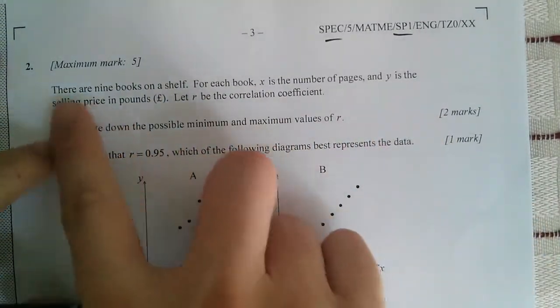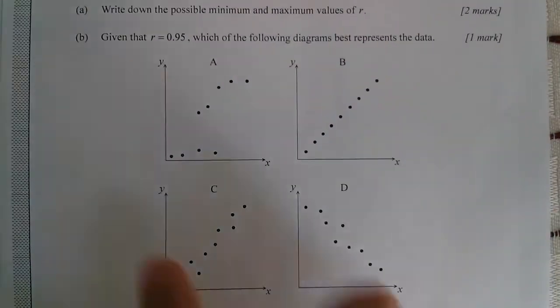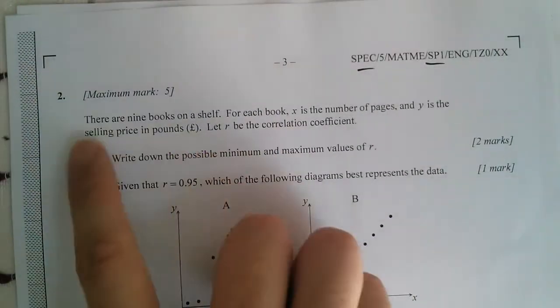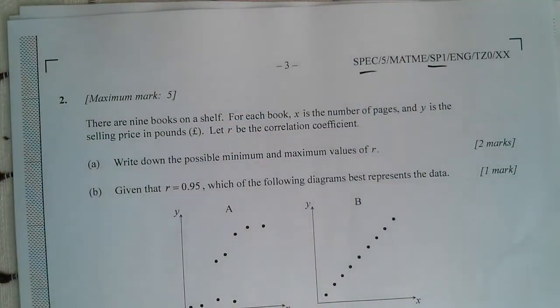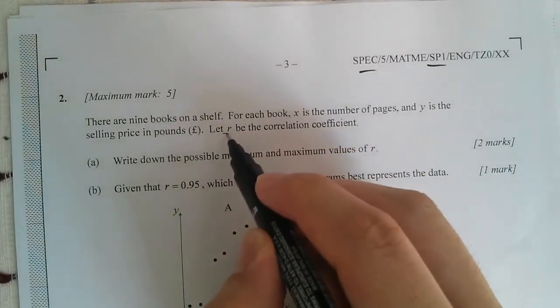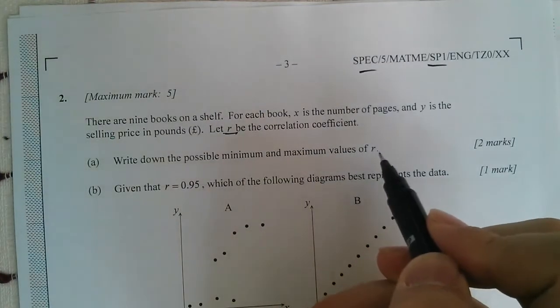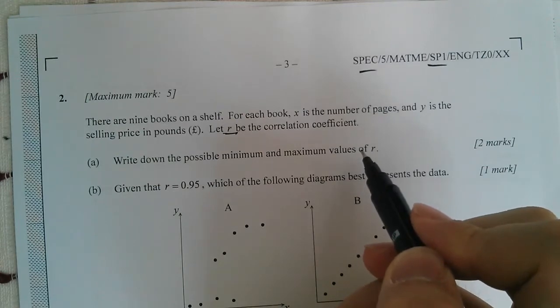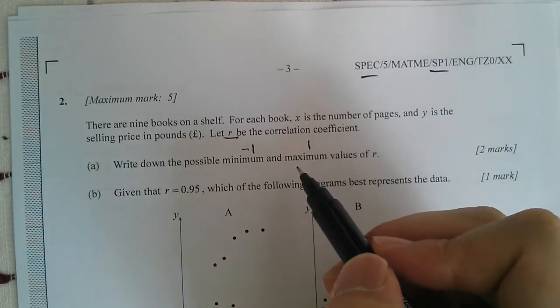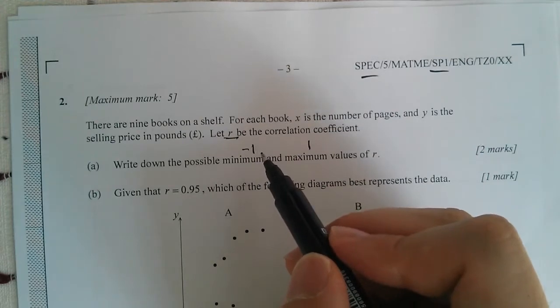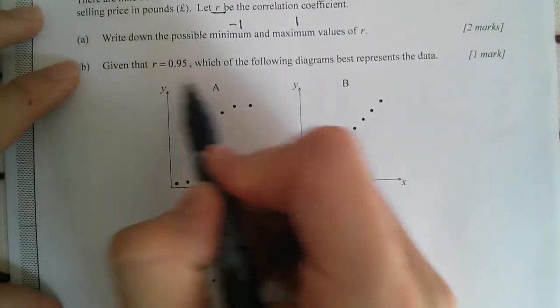This is the paper one. In paper one, question two is already a correlation problem. You can see clearly because of this table and graph. There are nine books on the shelf. Let R be the correlation coefficient. The first question is really about your concept: write down a possible minimum and maximum value of R. What is the range of the correlation coefficient? It would happen to be between negative one and one. One meaning it's a perfect positive correlation and negative one meaning it's a perfect negative correlation.